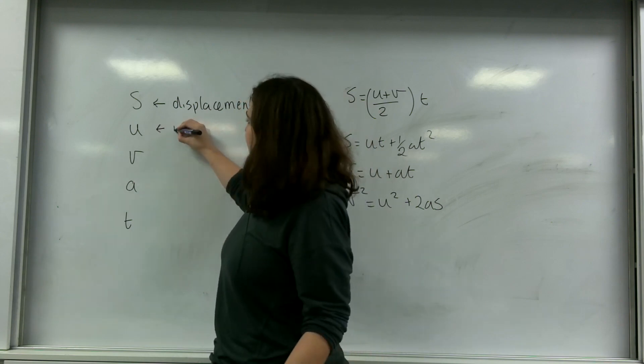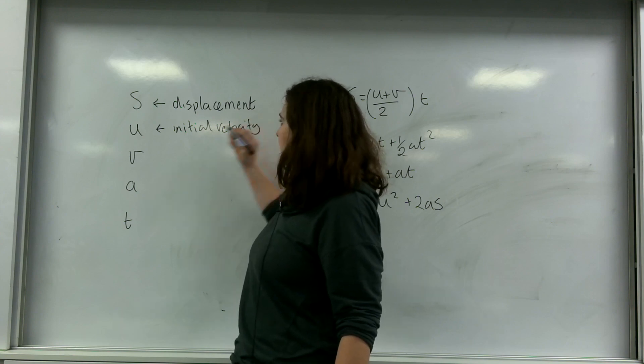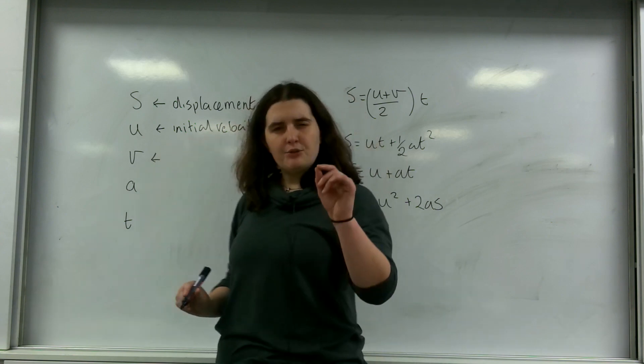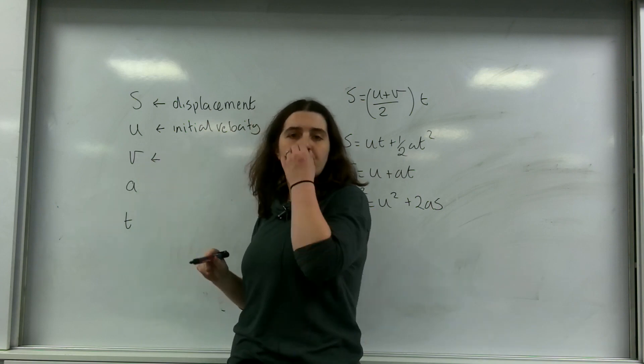U is the initial velocity. V, and it's really important, notice how I do the V? I put a little tick on the end of it. That means it's velocity.